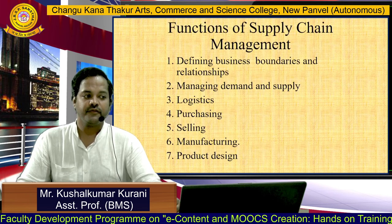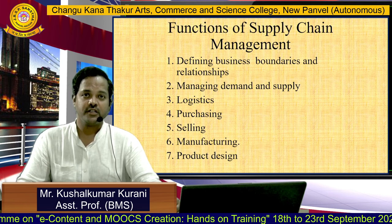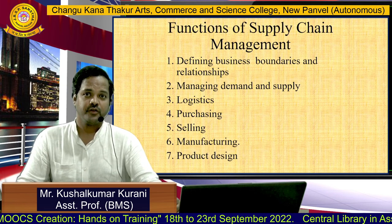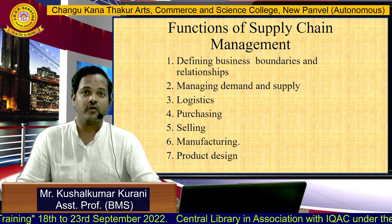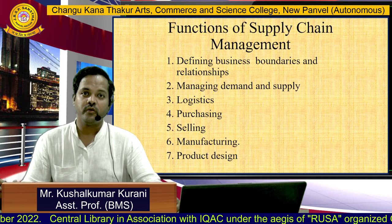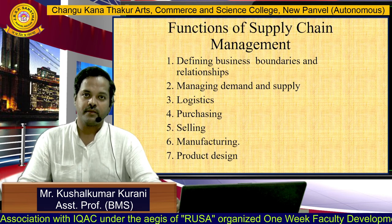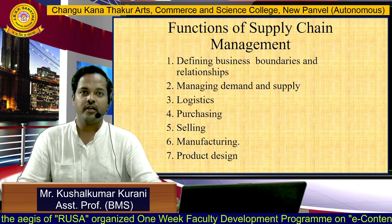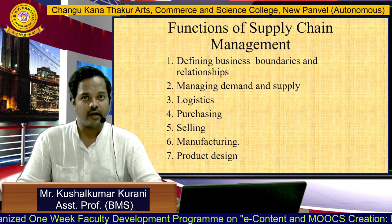The next slide covers the functions of supply chain management. First is defining business boundaries and relationships. Supply chain starts from the manufacturer and goes to the customer, so we have to define the boundaries — whether we can cater to a particular area, state, or country. Second is managing demand and supply. Today demand is continuously happening, so we have to make sure goods are available with us to supply regularly and meet customer demand.